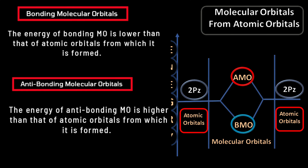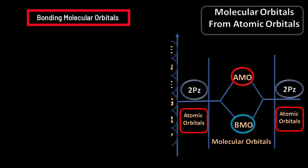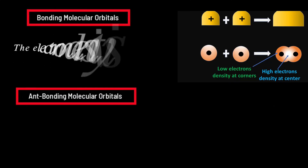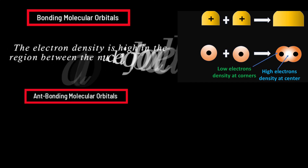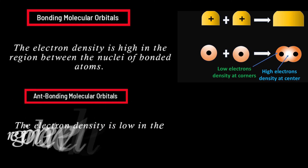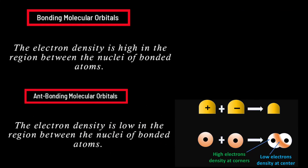Let us consider the fourth difference. The electron density is high in the region between the nuclei of the two bonded atoms in the bonding molecular orbital, while the electron density is low in the region between the nuclei of the two bonded atoms in anti-bonding molecular orbitals.